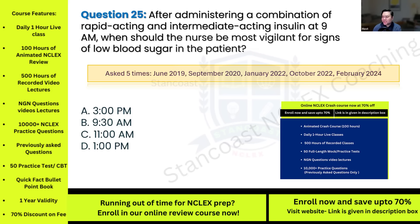Question twenty-five: After administering a combination of rapid-acting and intermediate-acting insulin at 9 a.m., when should the nurse be most vigilant for signs of low blood sugar in the patient? This has been asked five times. Options: A) 3 p.m.; B) 9:30 a.m.; C) 11 a.m.; D) 1 p.m.